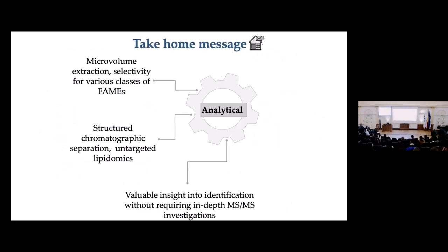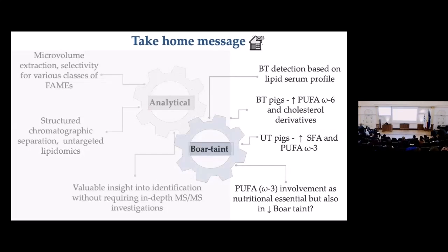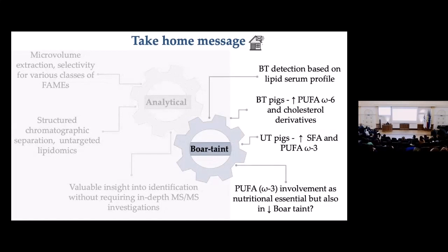For the take-home message from the analytical point of view: this is a micro-volume extraction of fatty acids, optimized so it does not create bias or discriminate against any classes. We are able to see structured chromatographic separation as expected, which helps us do untargeted analysis. Regarding boar taint: this was the first study of this kind using serum sample and lipid profile for identification. We saw differences — PUFA omega-6 and cholesterol were increased in tainted pigs, while SFA and omega-3 were increased in untainted pigs.